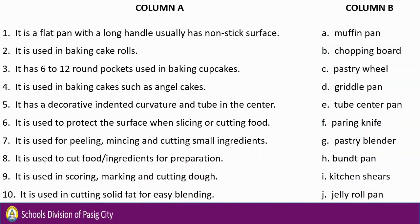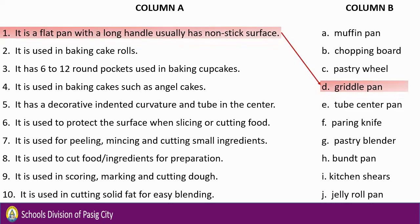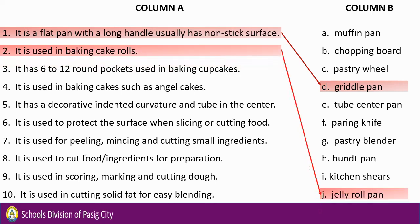Number 1: It is a flat pan with a long handle, usually has a non-stick surface. Number 2: It is used in baking cake rolls. Number 3: It has 6 to 12 round pockets used in baking cupcakes.